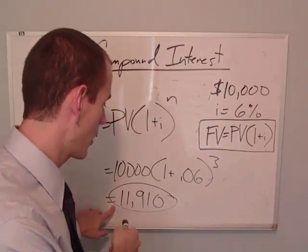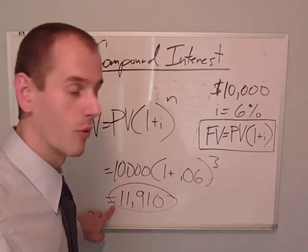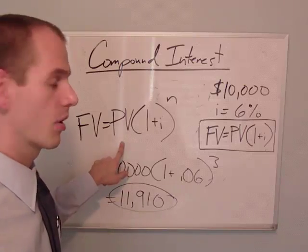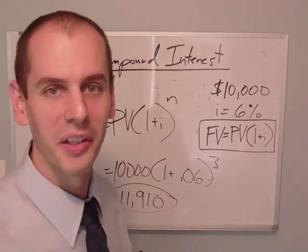So you'll notice this right here is the same answer as we had before. This right here is the formula for compounding. This is compounding interest.